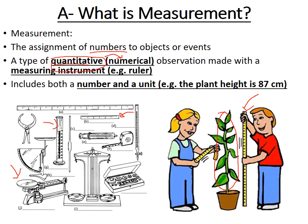A measurement is going to have two parts to it: there's going to be the number and the unit. For example, the plant has a height of 87 — there's the number and the unit is centimeters. Some units lend themselves better for different situations. For example, you wouldn't want to measure the height of the plant in kilometers; you're more likely to stick to something like centimeters, which makes more sense.